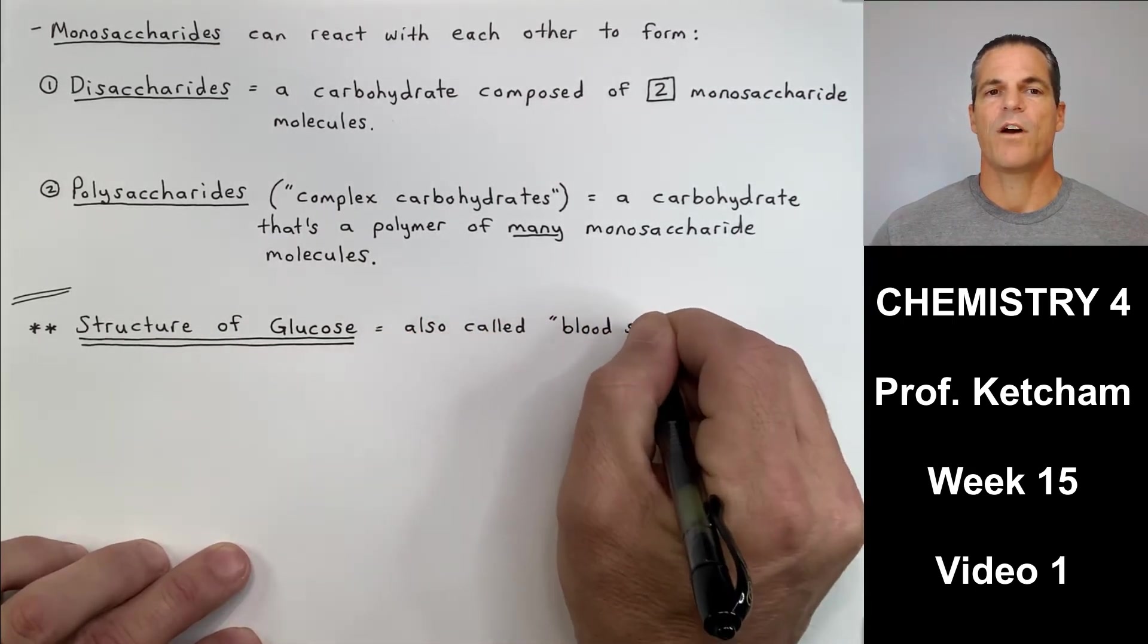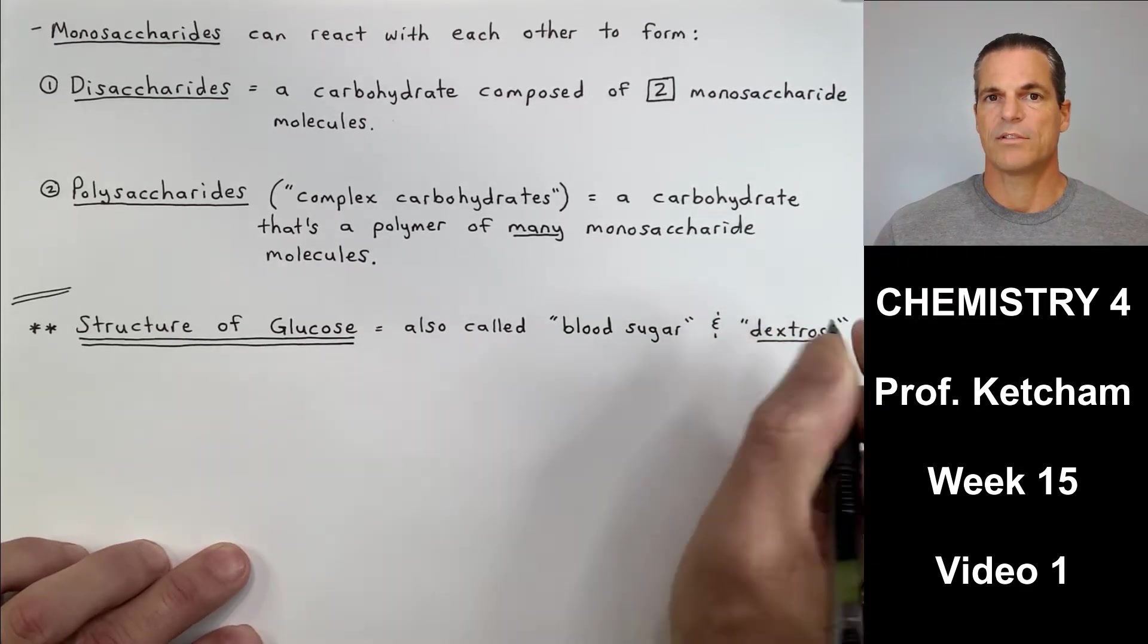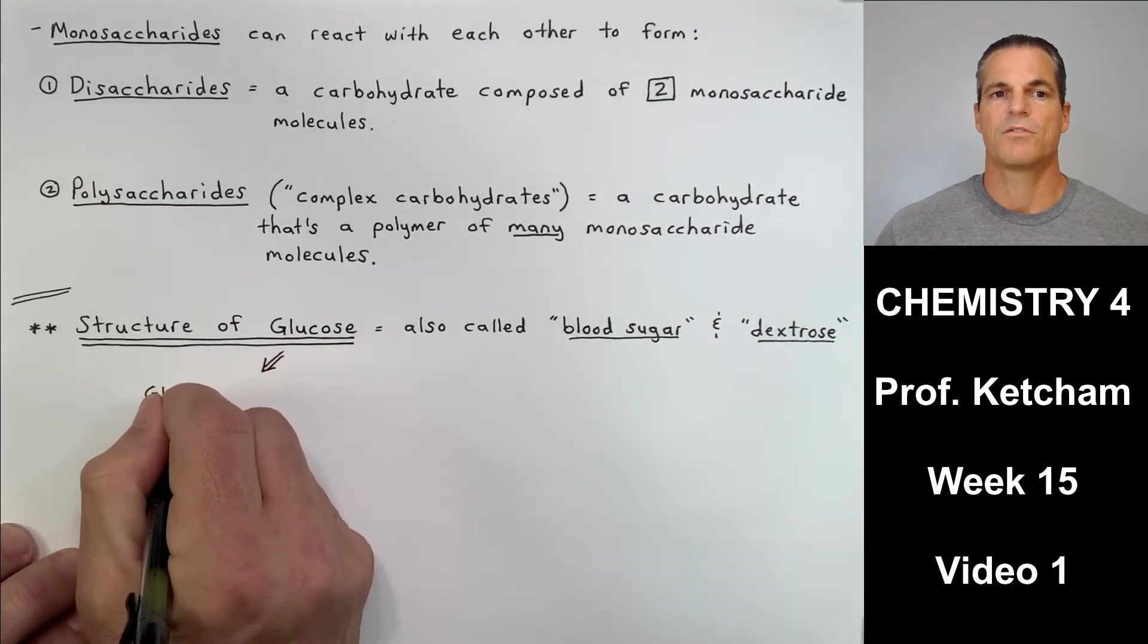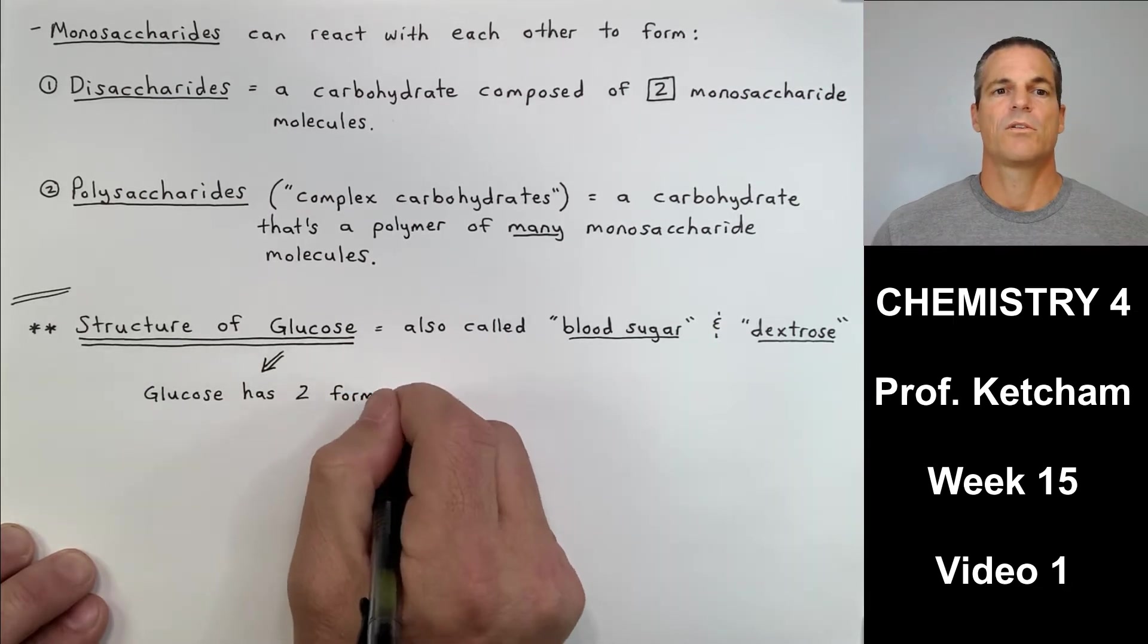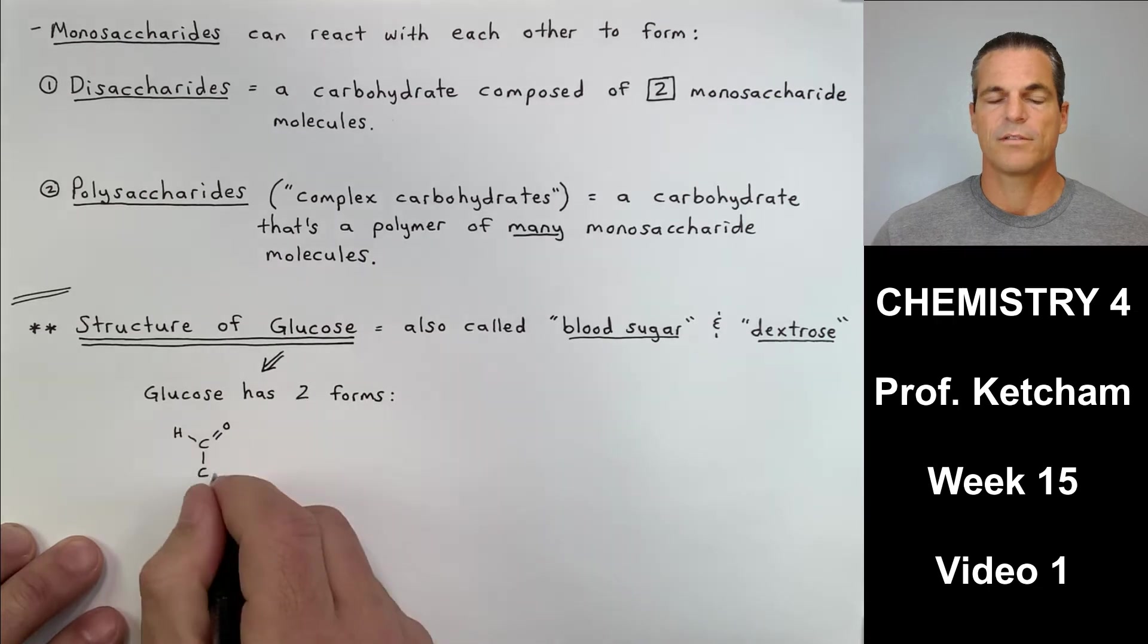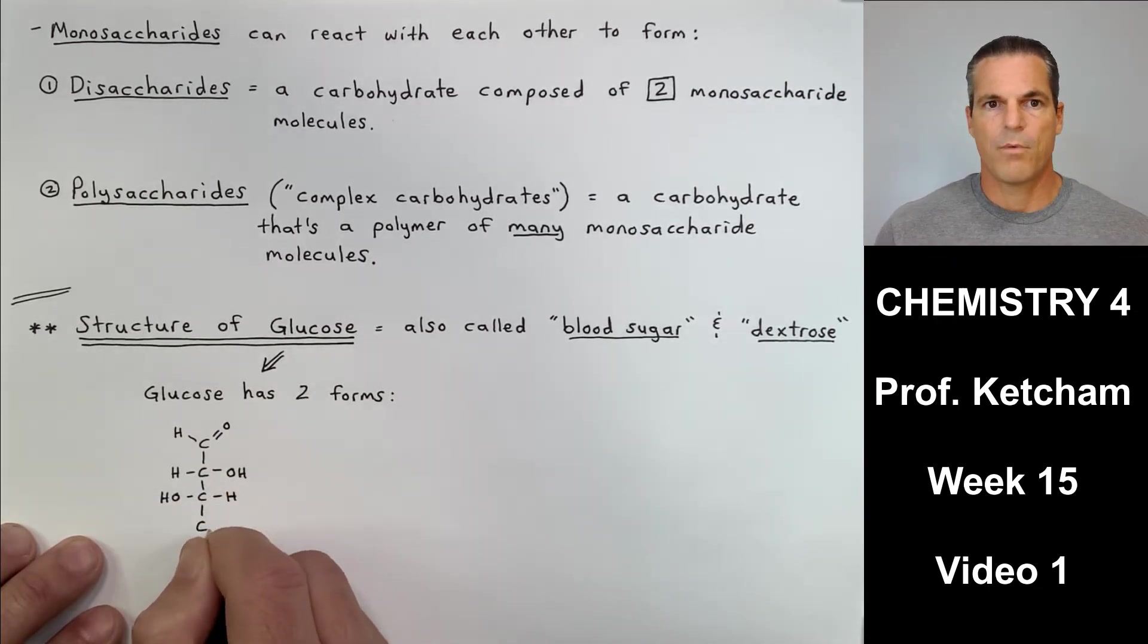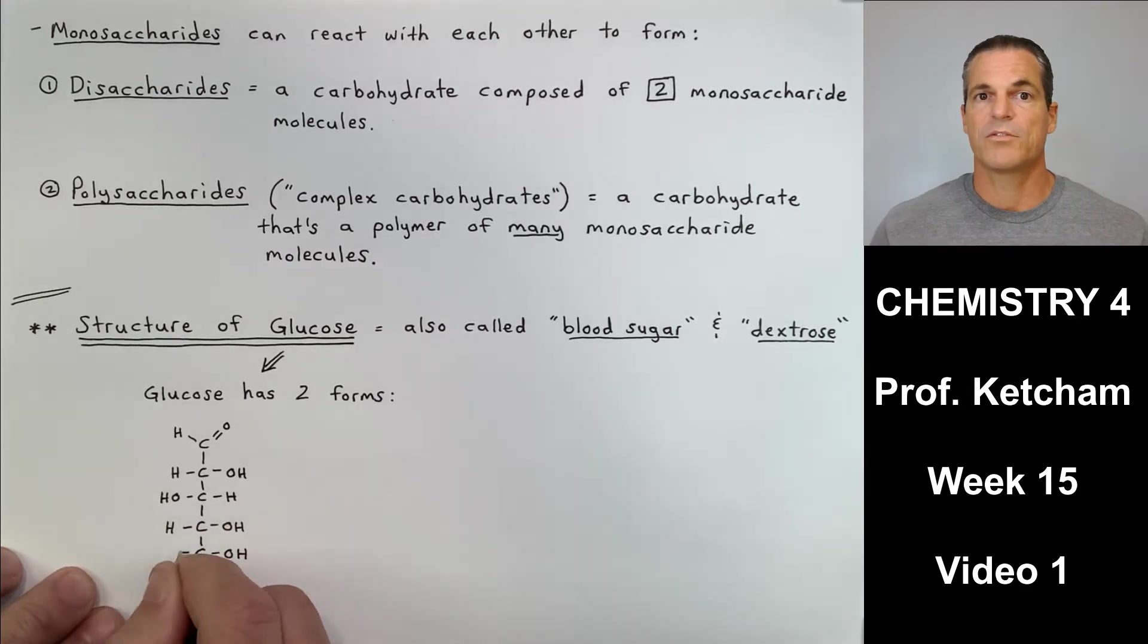So far we've talked about glucose and fructose as our two monosaccharides that we discussed and we drew with a Fischer projection, the structures. I want to take a closer look at glucose. So glucose, which is also called blood sugar or dextrose, they use those in IVs, right? It's already as simple as it's going to be. So it can go right into your bloodstream. It doesn't have to be broken down by enzymes in the stomach.